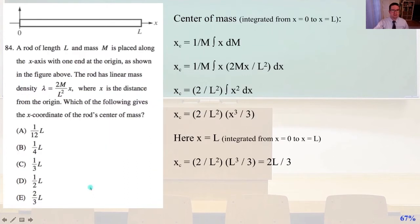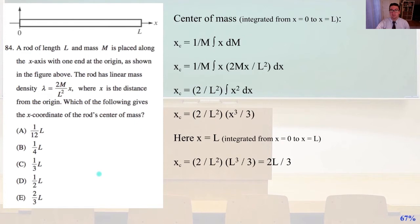Problem 84: a rod of length l and mass m is placed along the x-axis with one end at the origin, as shown in the figure above. The rod has linear mass density lambda — lambda equals 2m over l squared times x, where x is the distance from the origin. Which of the following gives the x-coordinate of the rod's center of mass? The center of mass, integrated from x equals 0 to x equals l, is x_c equals 1 over m times the integral of x dm.